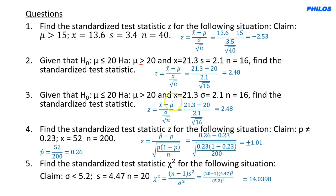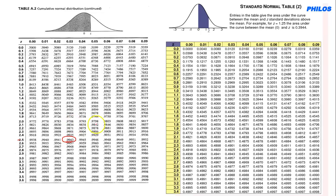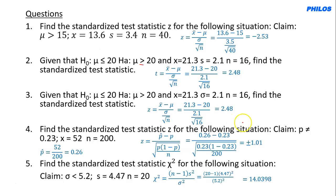For Question 3 (z = 2.48, one-tailed), look up 2.48 in the z-table: 0.9934. Then p-value = 1 − 0.9934 = 0.0066. Since it is a one-tailed test, the p-value remains 0.0066. If it were two-tailed, you would multiply by 2.